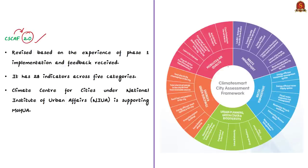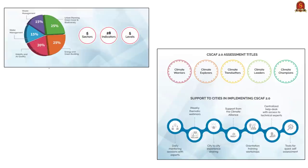The framework has 28 indicators across 5 broad categories: first, energy and green buildings; second, urban planning; third, green cover and biodiversity; fourth, mobility and air quality; and fifth, water management and waste management. The Climate Center for Cities under the National Institute of Urban Affairs is supporting the Ministry of Housing and Urban Affairs in the implementation of this framework.